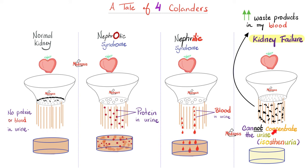When the kidney cannot concentrate or dilute the urine, it's called isostenuria. Let's break that down. 'Uria' means urine. 'Iso' means same. 'Stenos' means strength — so similar strength, similar concentration, the same osmolality of the urine every time. Cannot concentrate it, cannot dilute it. That's why the classic description is that the specific gravity, or concentration of the urine, is low and fixed in chronic kidney failure.